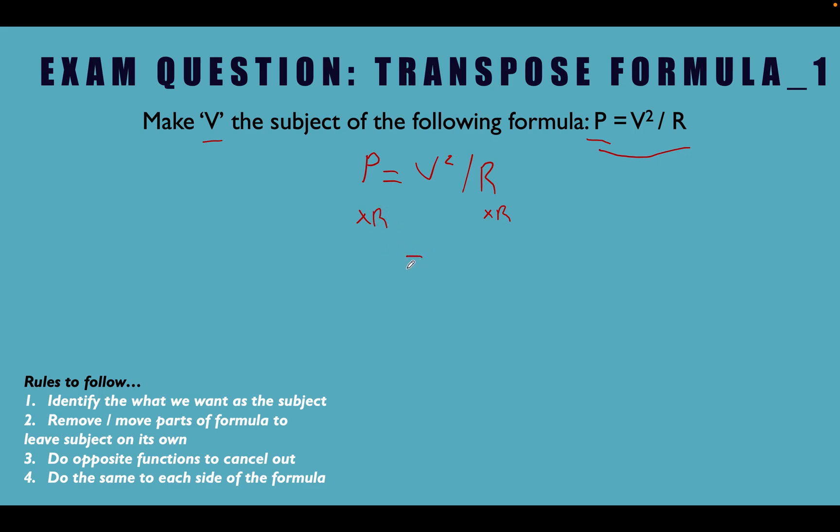Okay, so now what does our formula look like? We had P, we've multiplied it by R. So this is how we'd write it, we'd write PR. P multiplied by R. And this side, we had V squared divided by R. We've multiplied it by R, which is the opposite of divide by R. So we'd be left with this, V squared.